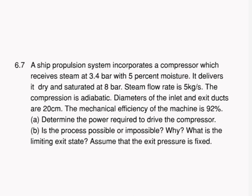Problem 6.7 is similar except it is a compressor instead of a turbine. The only difference is the inlet state is given as 5% moisture, meaning 95% vapour, i.e., dryness fraction of 0.95 — such terms may need explanation. Steam flow rate is 5 kg/s and diameters of inlet and exit ducts are 20 cm, giving you an opportunity to calculate inlet and exit velocities and show that delta KE is quite small. Part B again asks whether the process is possible or impossible — except here exit pressure is above inlet pressure.